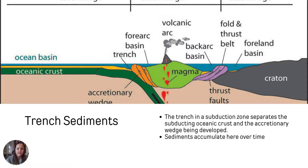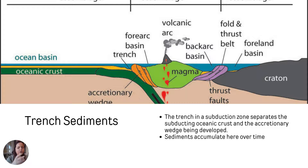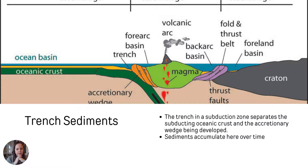We also have trench sediments, which can accumulate between the oceanic crust and the continental crust that are colliding. The accretionary wedge material is scraped off the top of the subducting oceanic plate, and there's still a little bit of trench area where sediments can be deposited underwater.